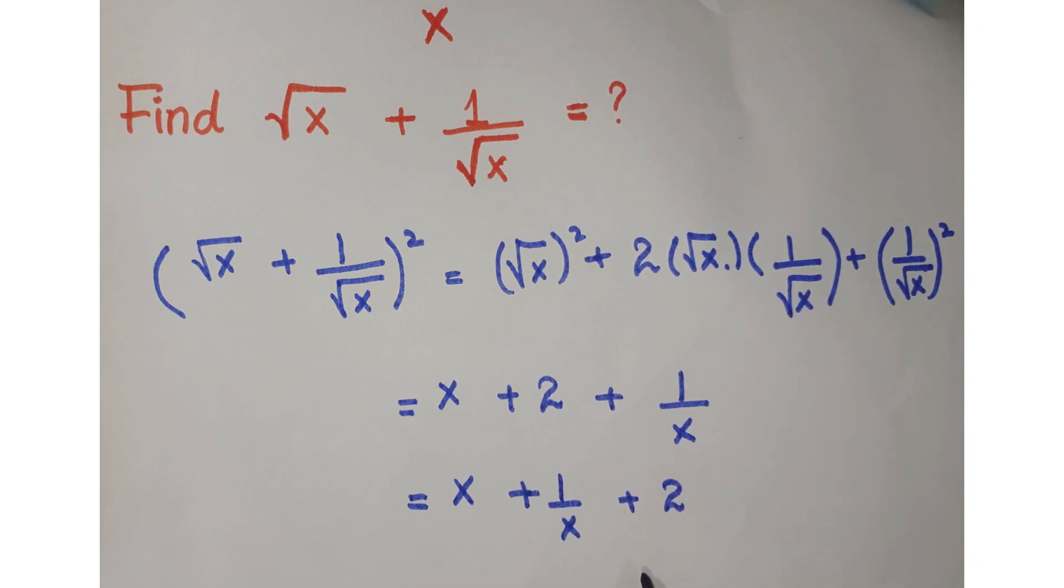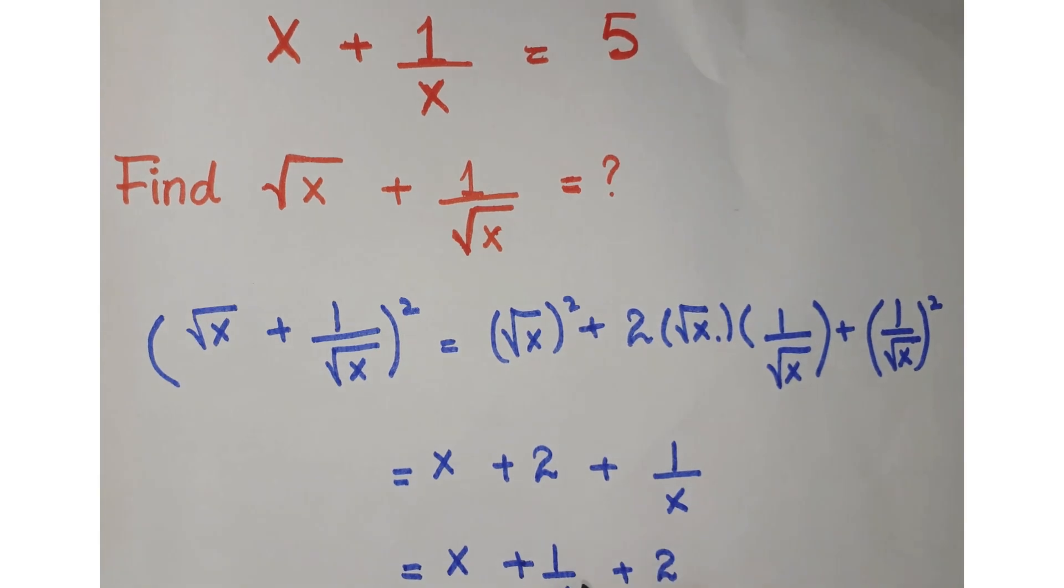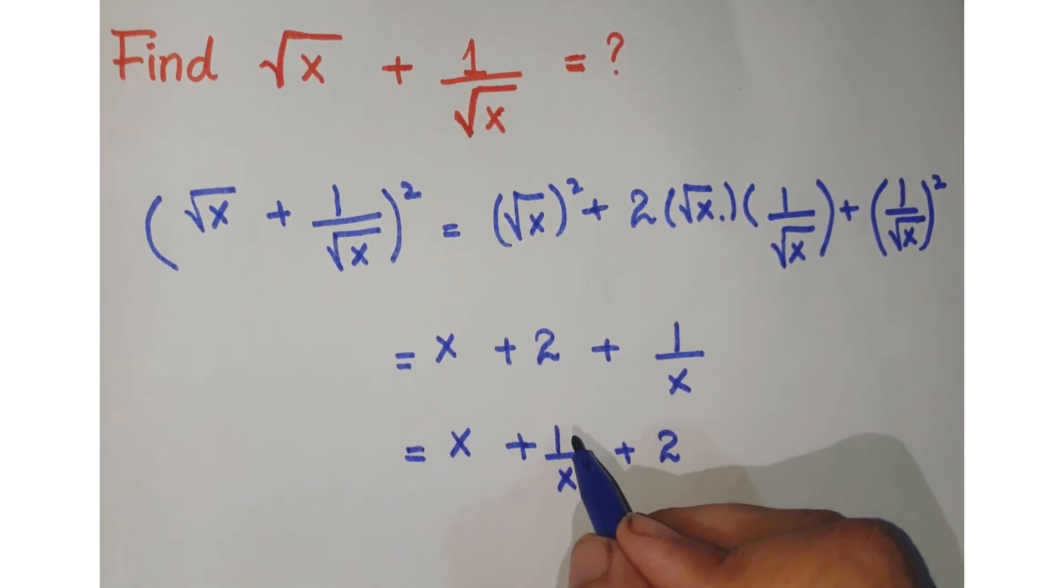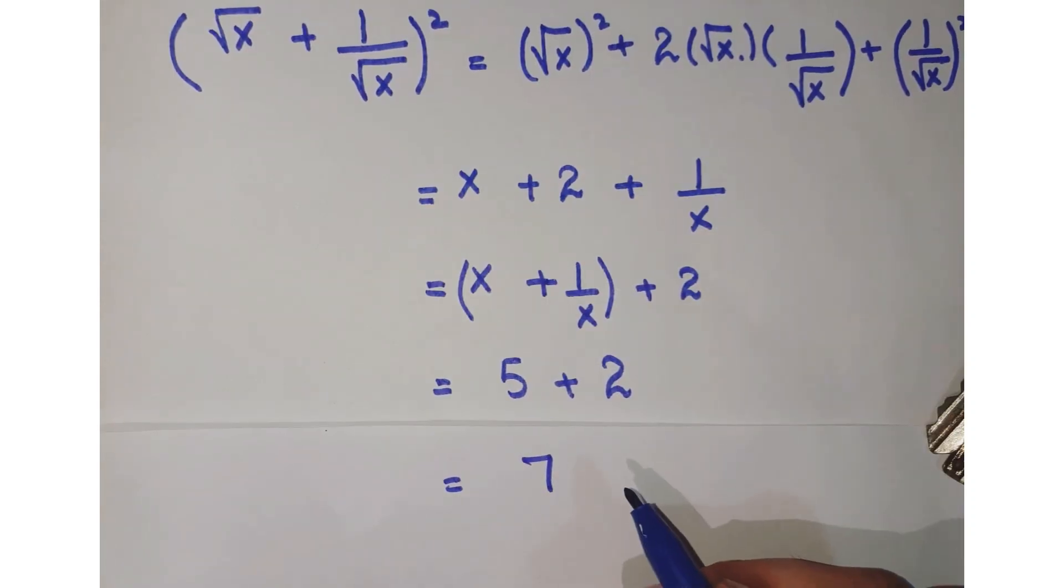Since x plus 1 over x has the value given, that is 5, so just replace it with 5. Now you replace this value with 5, so you get 5 plus 2 equals 7.